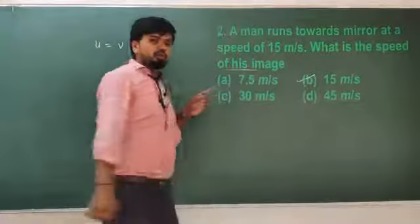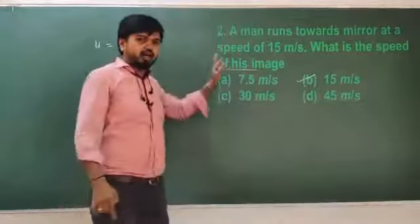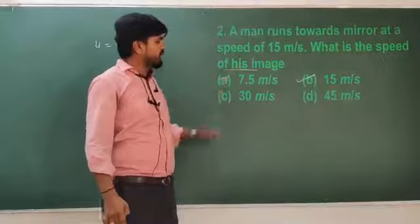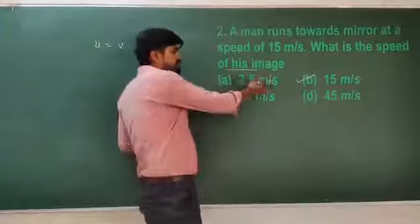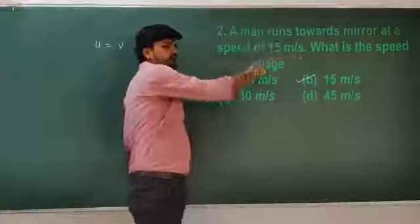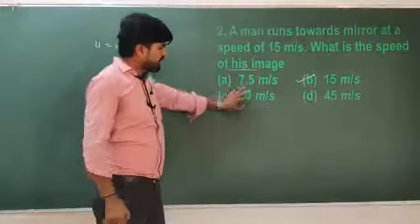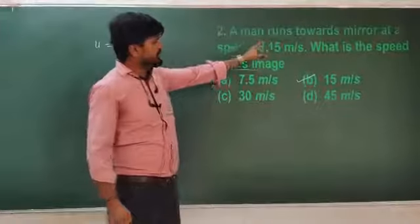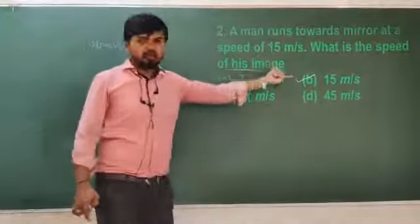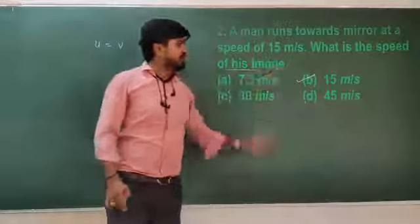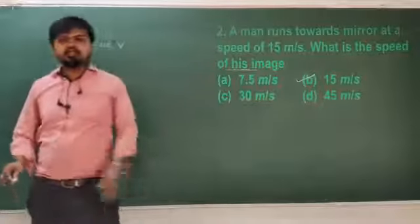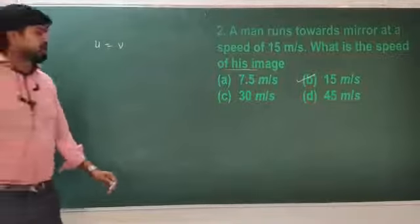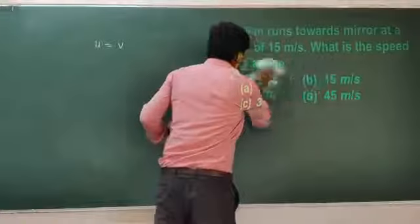But if the relative speed between a person and its image were asked, at that time we would calculate 15 plus 15. However, in this question we are asked only for the speed of the image, hence the correct option is Option C — 15 meters per second.